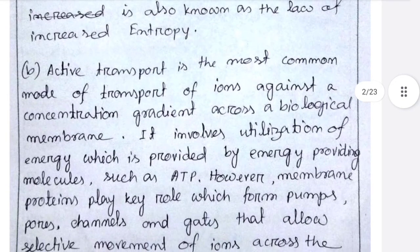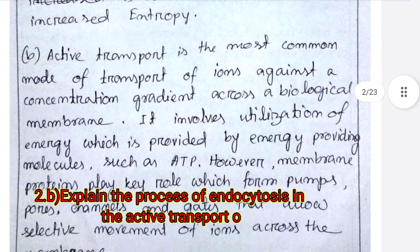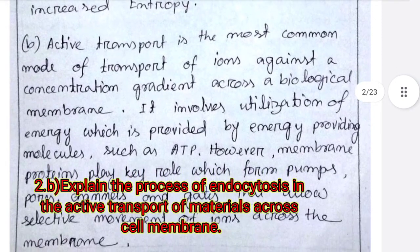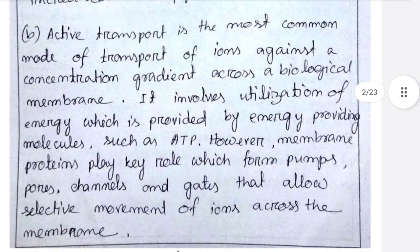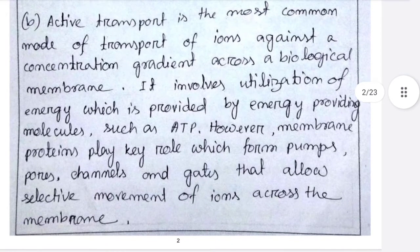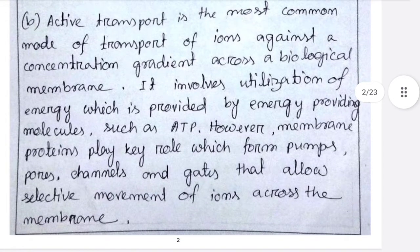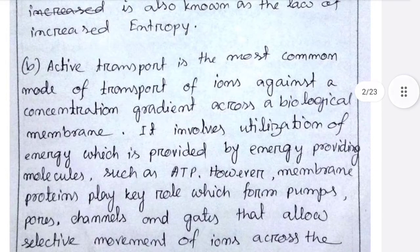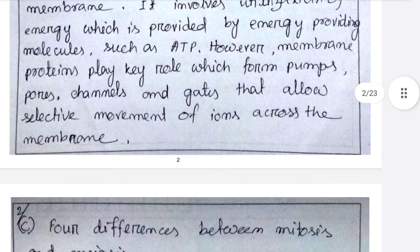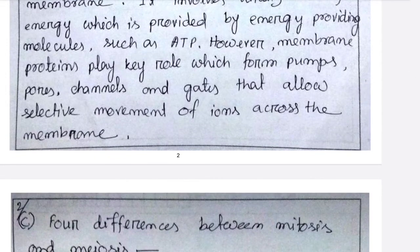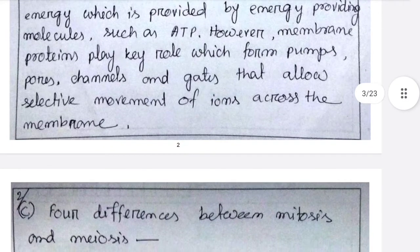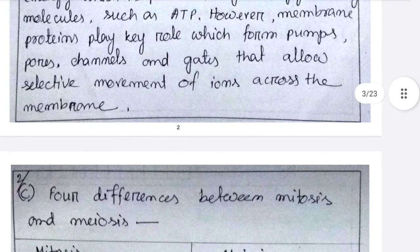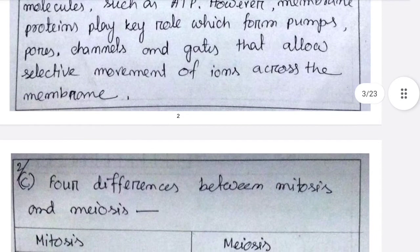Number B answer: active transport is the most common mode of transport of ions against a concentration gradient across a biological membrane. It involves utilization of energy, which is provided by energy-providing molecules such as ATP. Membrane proteins play a key role, forming pumps, pores, channels, and gates that allow selective movement of ions across the membrane.